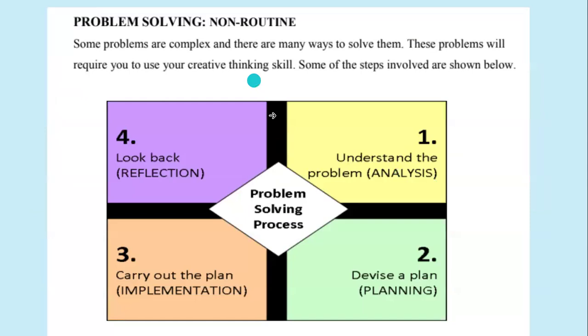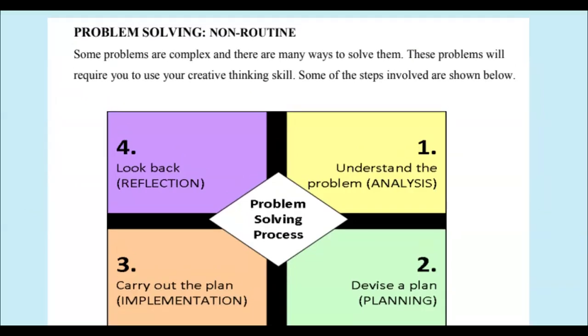With problem solving, some problems are complex, and there are many ways to solve them. These problems will require you to use your creative thinking skills. Some of these steps that are involved in the problem solving process are one, to understand the problem. This is basically doing an analysis. Two, to make a plan to solve the problem. This is simply choosing a strategy or, in simpler terms, a way to solve your problem, which can be but not limited to drawing diagrams, using tables, looking for patterns, working backwards, and others. We'll look at this in much more detail when we do our performance task preparation.